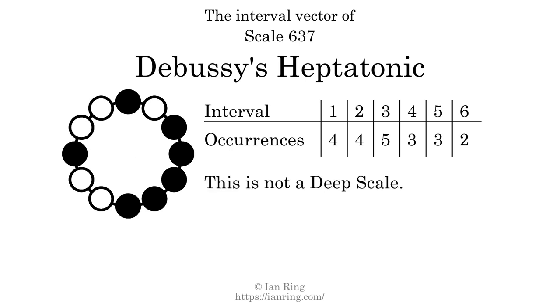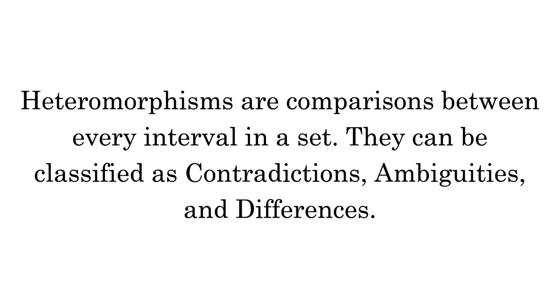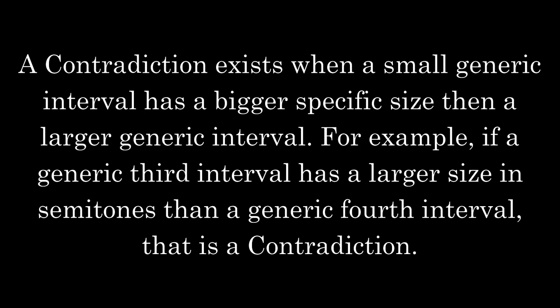Each interval does not appear in this scale a unique number of times, so this is not a deep scale. Heteromorphisms are comparisons between every interval in a set. They can be classified as contradictions, ambiguities, and differences. A contradiction exists when a small generic interval has a bigger specific size than a larger generic interval — for example, if a generic third interval has a larger size in semitones than a generic fourth interval.